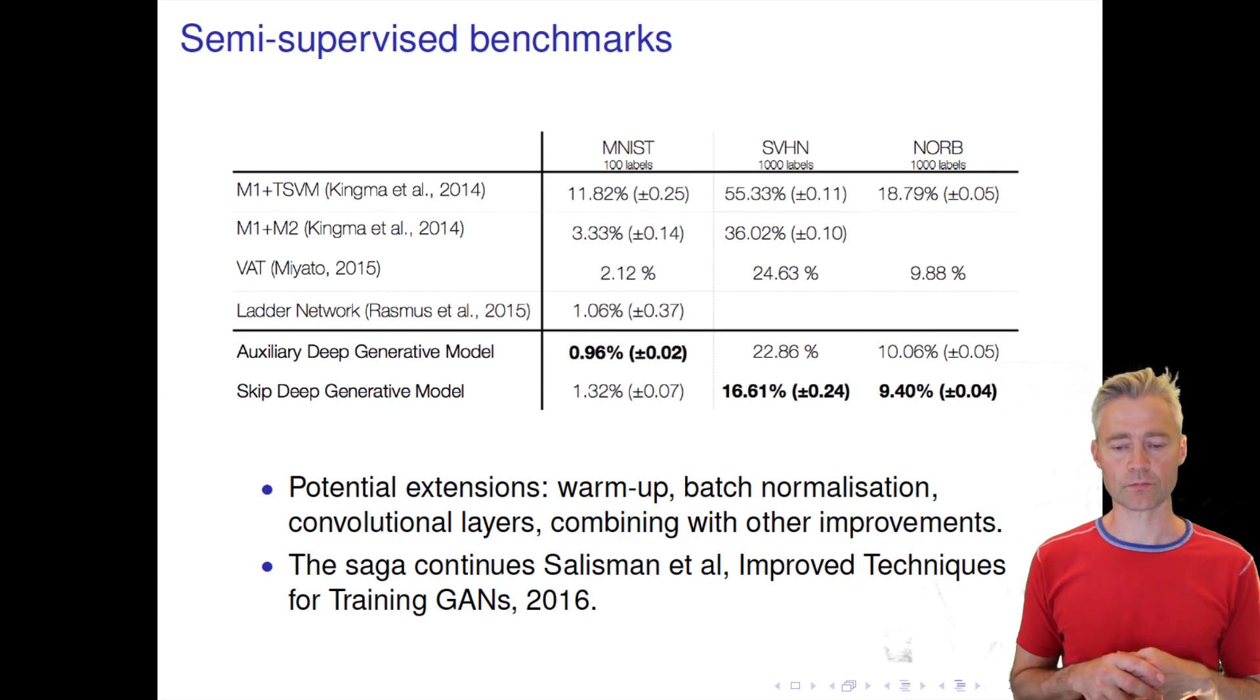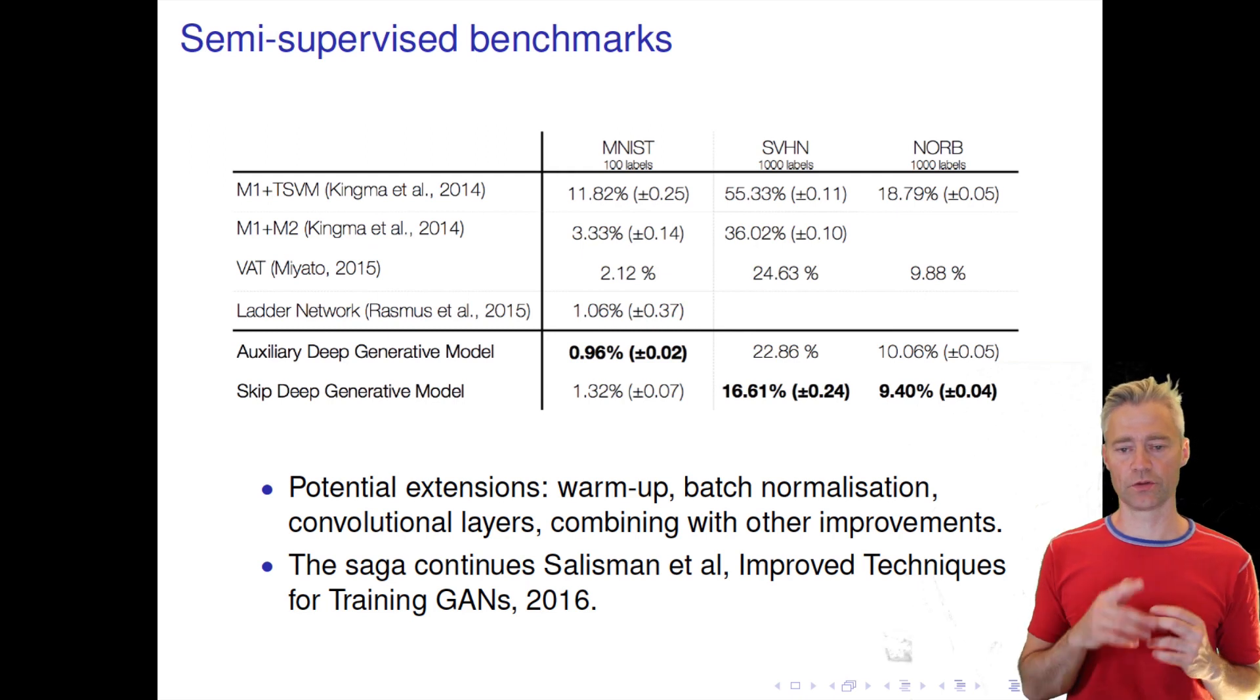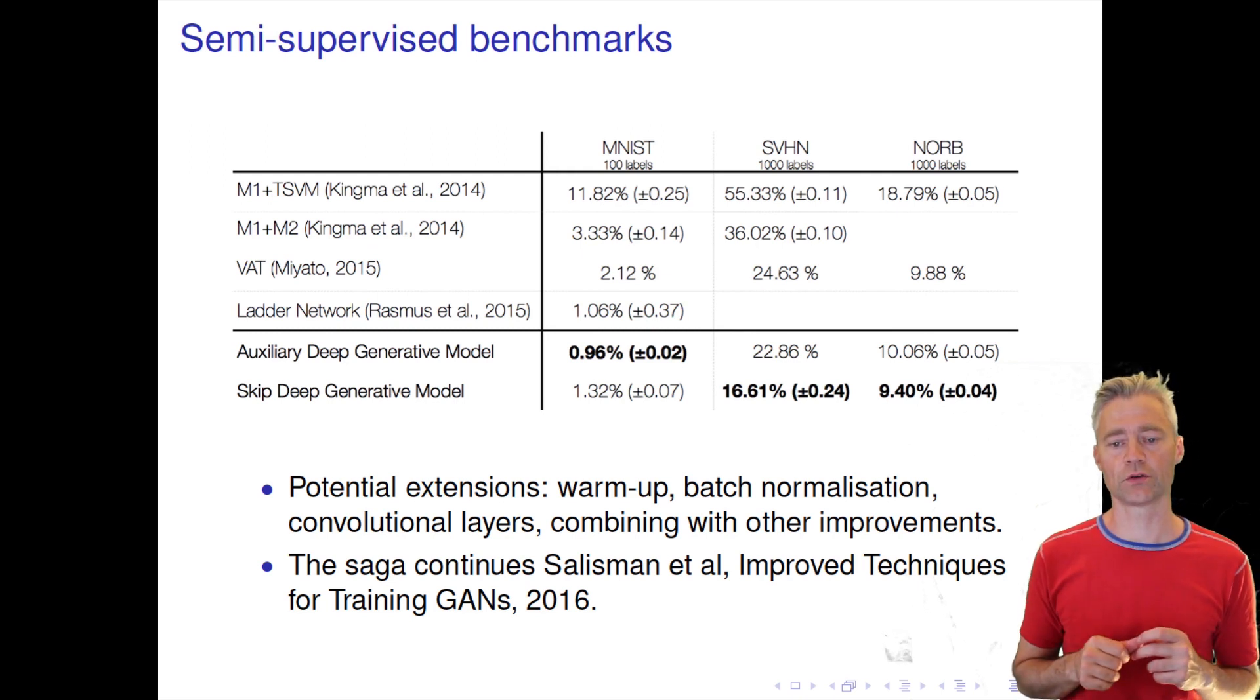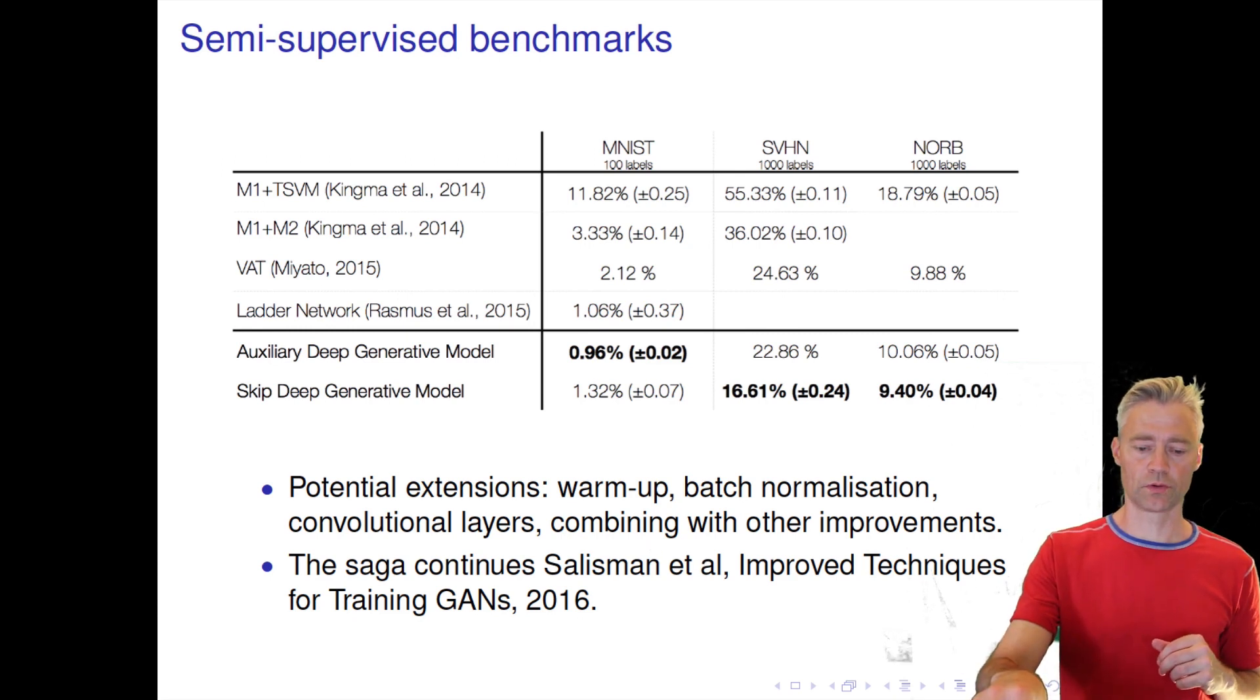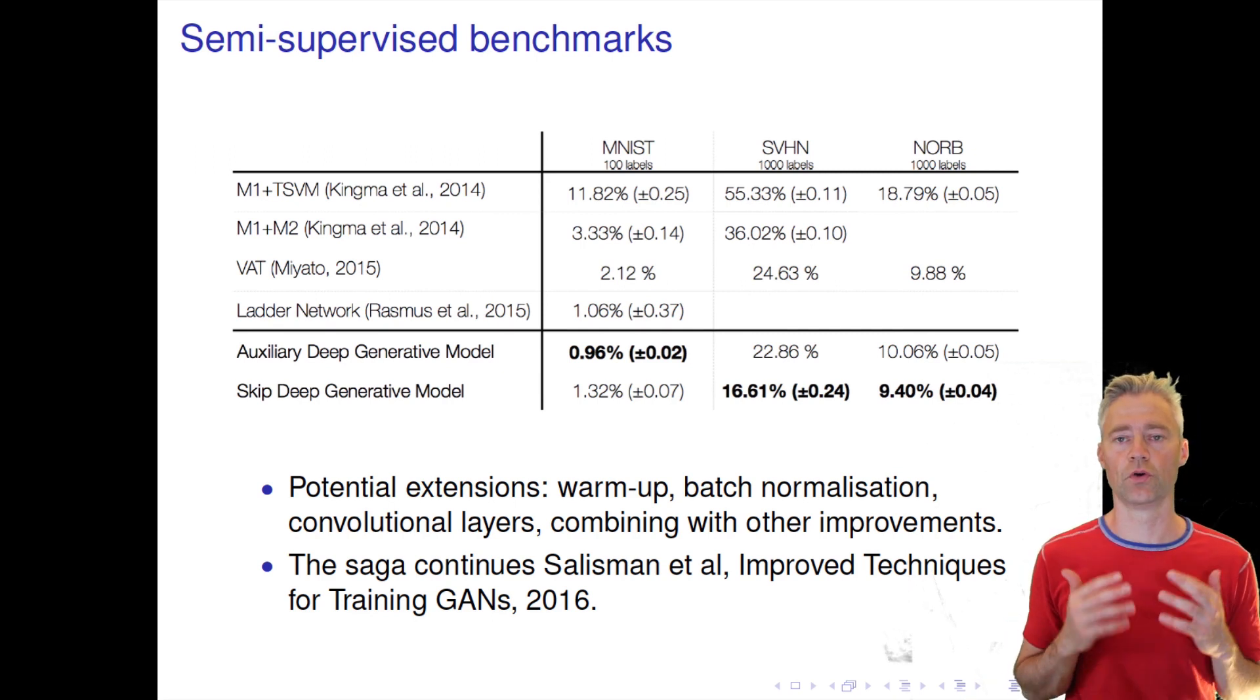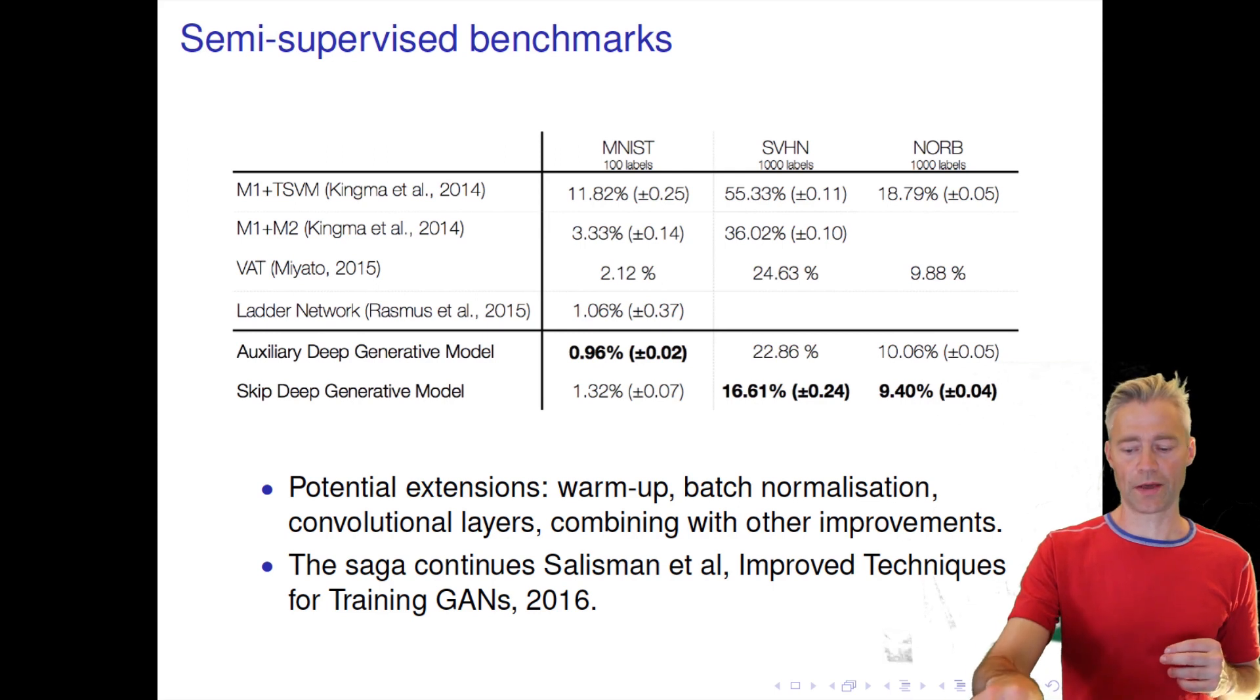And also on two other famous benchmarks, the Google Street View house numbers and the NORB dataset, we at least for some time had the world record in semi-supervised learning, achieving these errors with only 1,000 labeled datasets. And I should also say that recently there's been improvements by a group from OpenAI using the so-called generative adversarial networks. But we plan, of course, to take back the world record in these semi-supervised learning tasks.